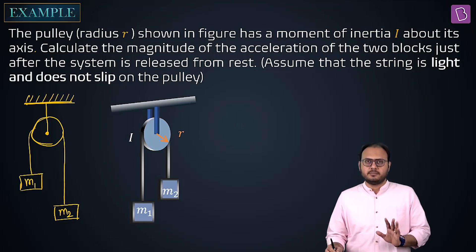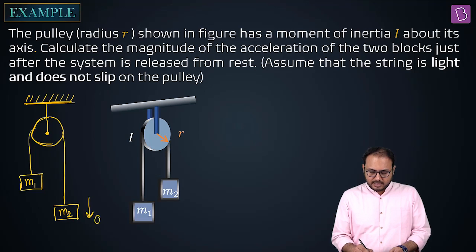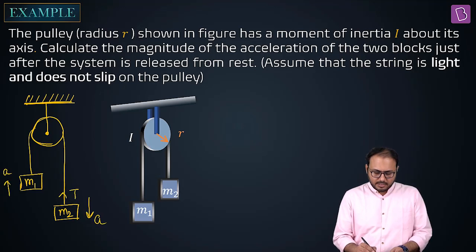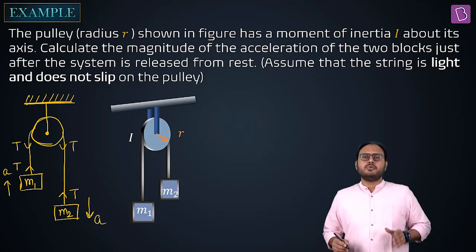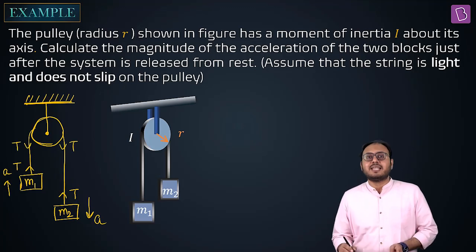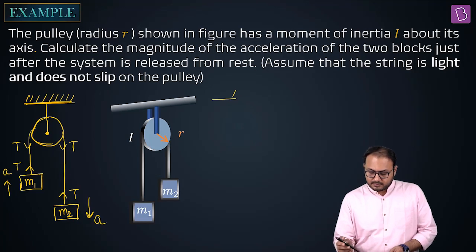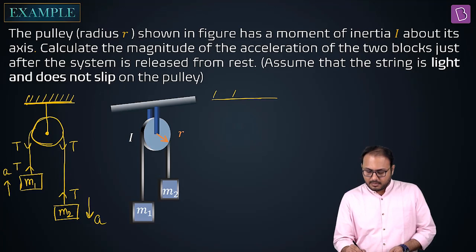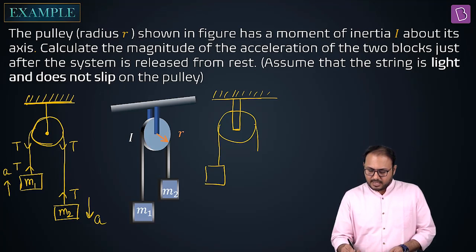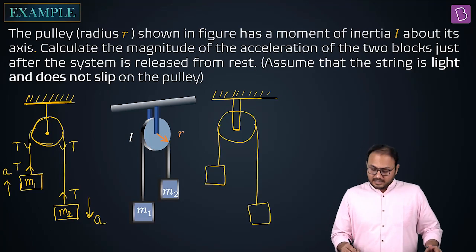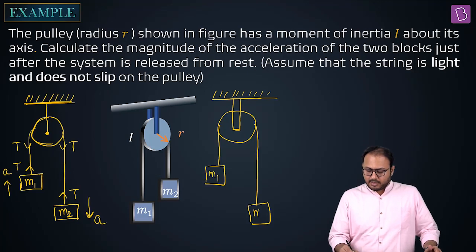The pulley used to be smooth and light. This used to give us a single tension T throughout the string. Now the problem with the new case is this: the pulley still has an inertia.